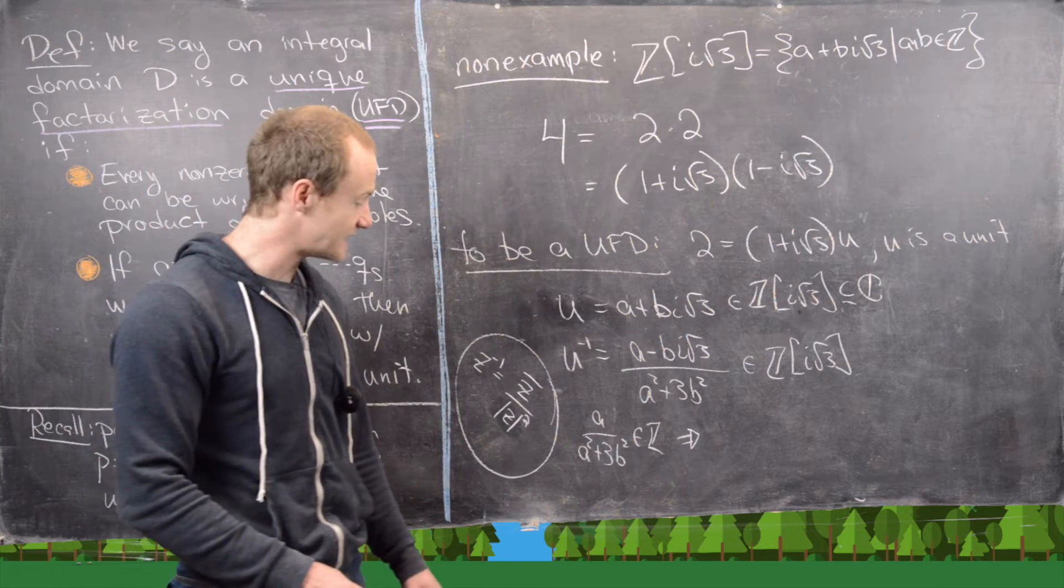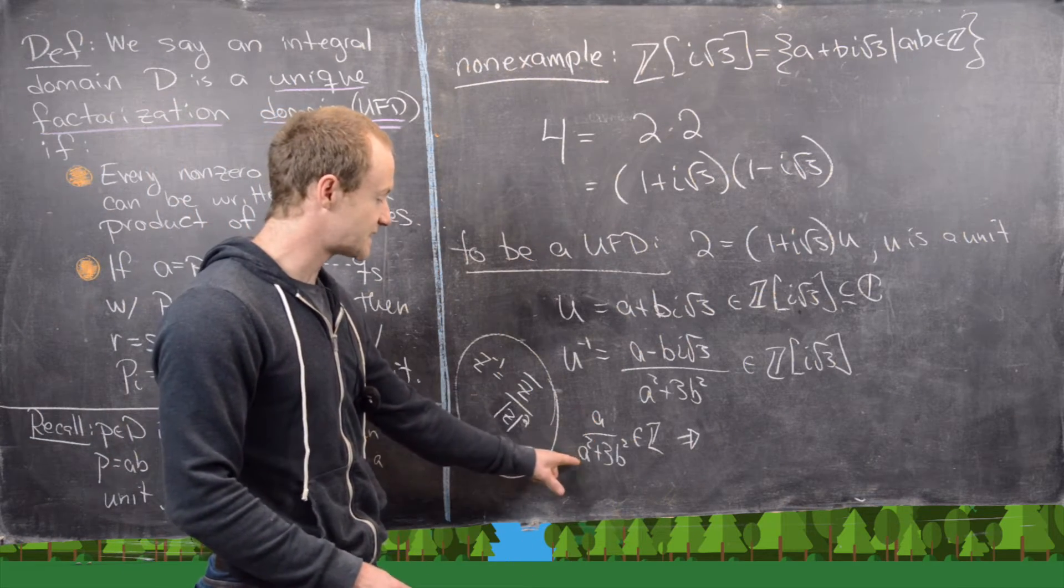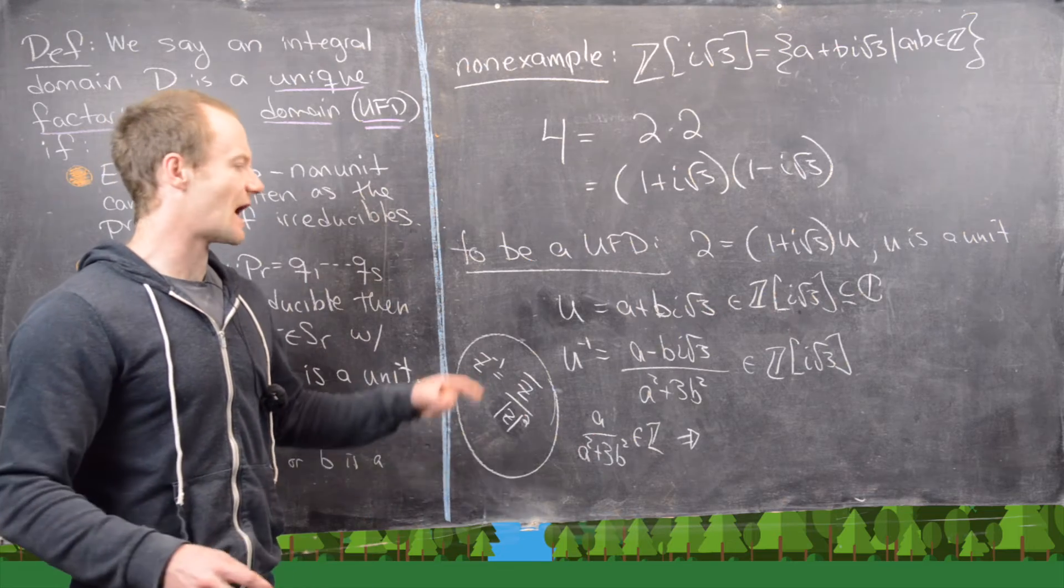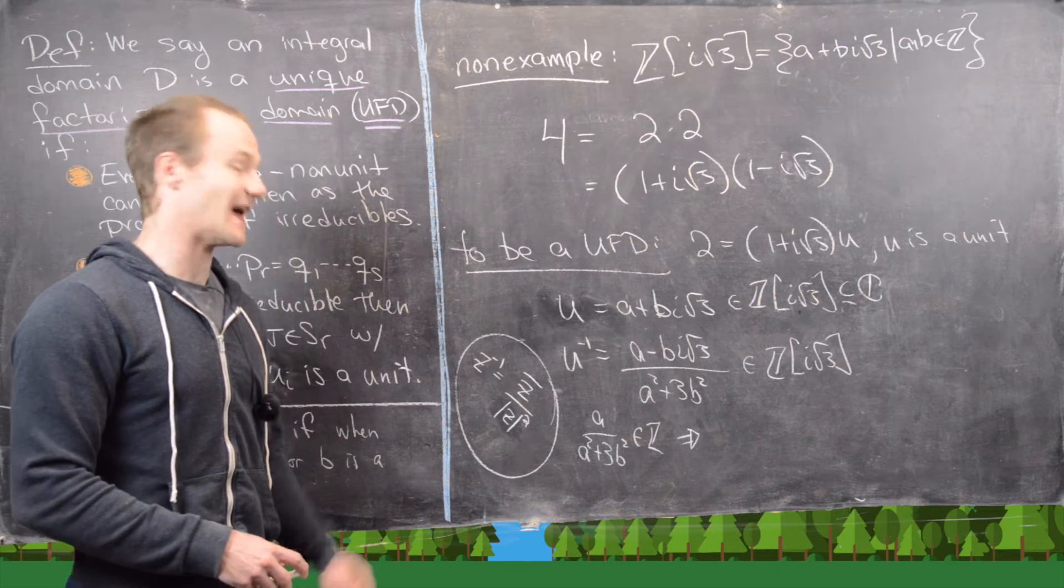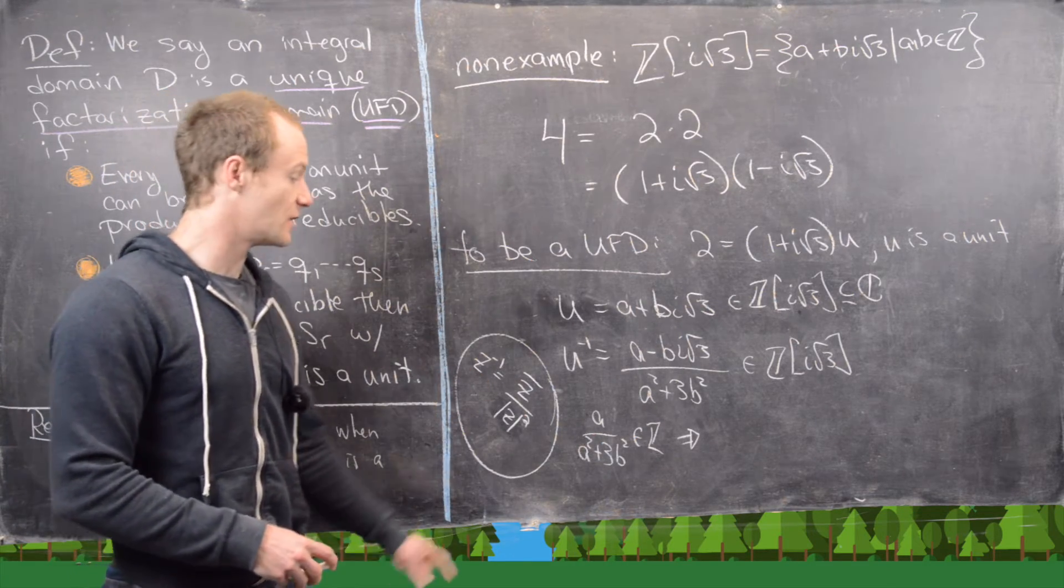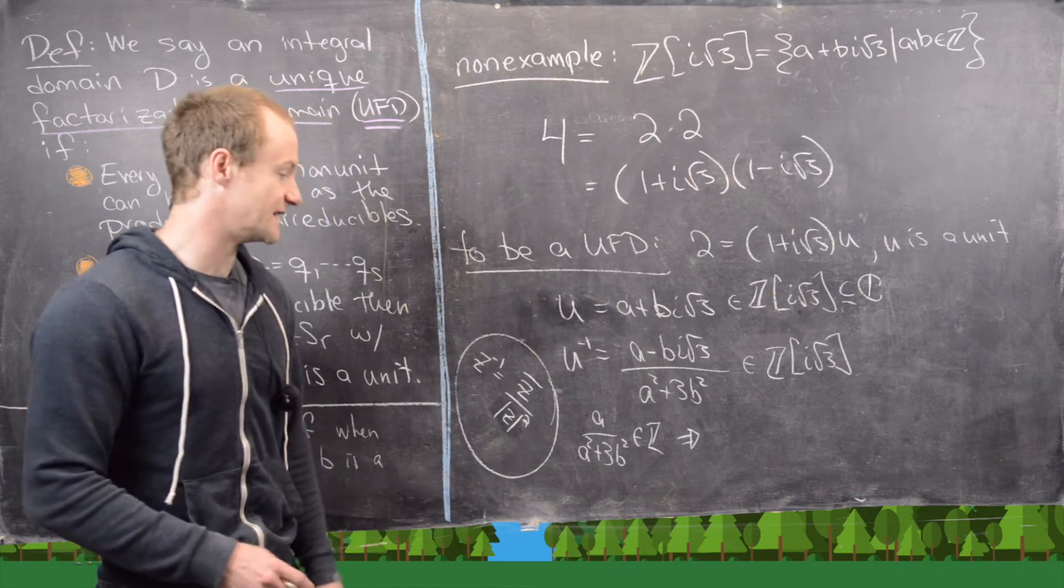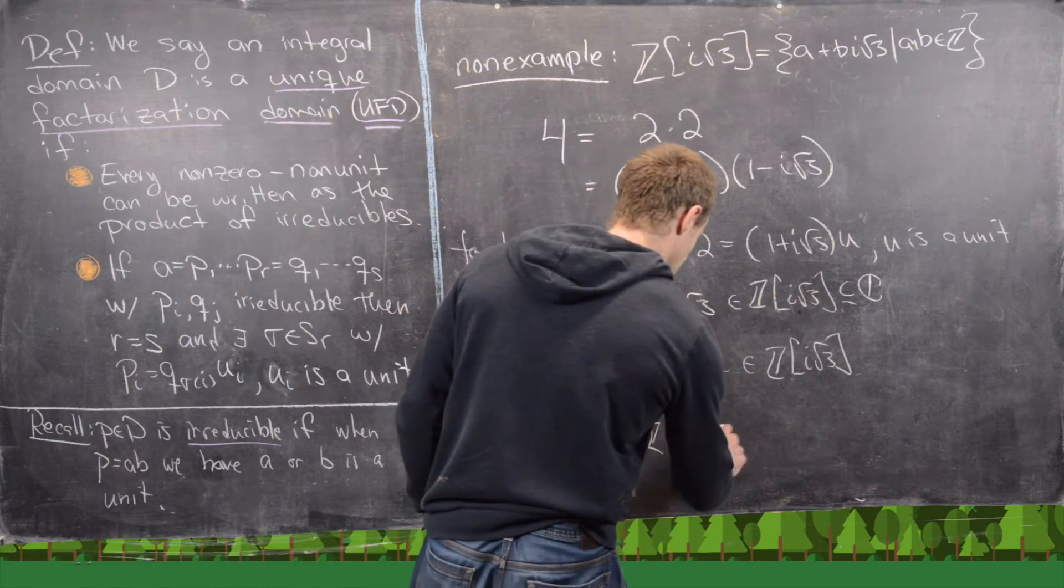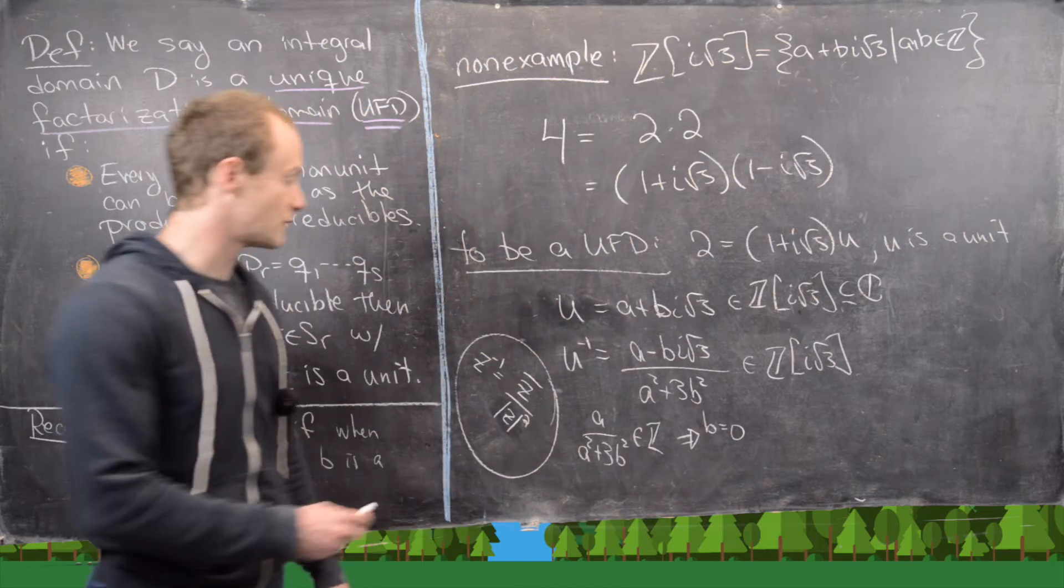Okay, so that gives us two cases. Either A is equal to 0 and B is not equal to 0. And so I'll let you guys check that that doesn't actually work. And so the only case that's left over is that B has to be equal to 0.